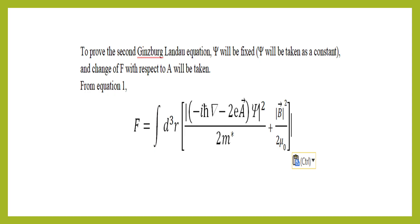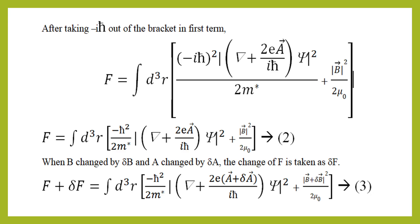When we take the partial derivative of Chi with respect to A, the term d(Chi-star)/dA will be zero. So we substitute Chi-star equals zero in equation number one. In this case the free energy depends only on the magnetic field. After taking minus i h-bar out of the bracket in the equation, the free energy is written in terms of the magnetic field B.